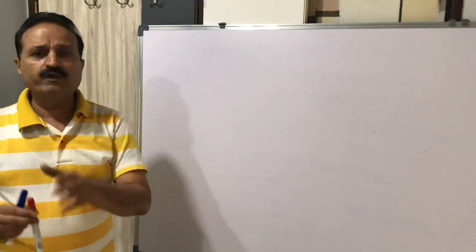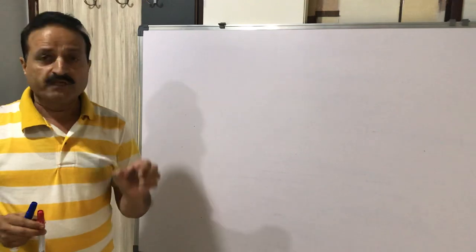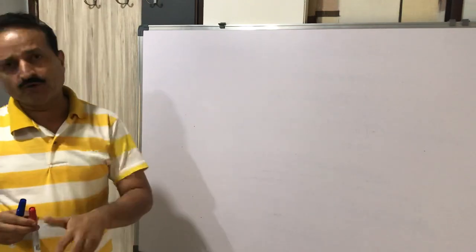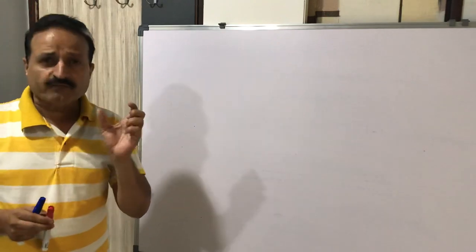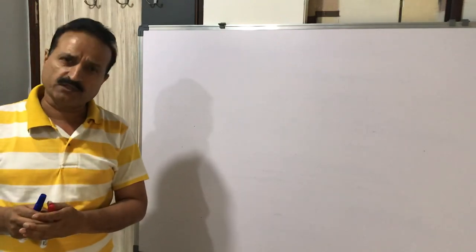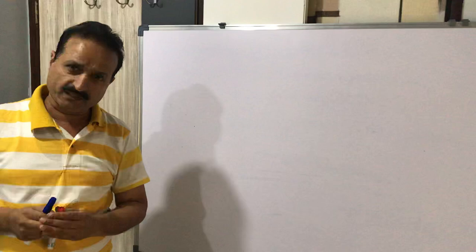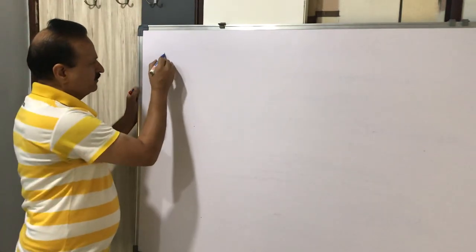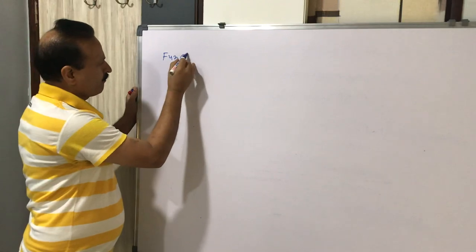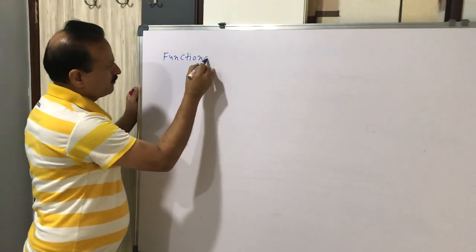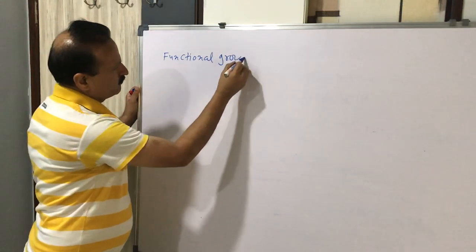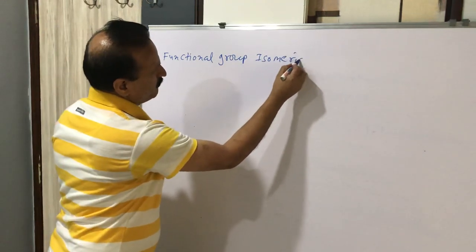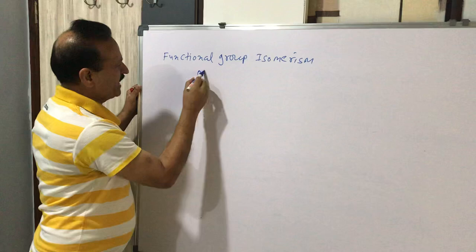Now we are going to discuss what is functional group isomerism. Aldehyde and ketone are functional group isomers of each other.